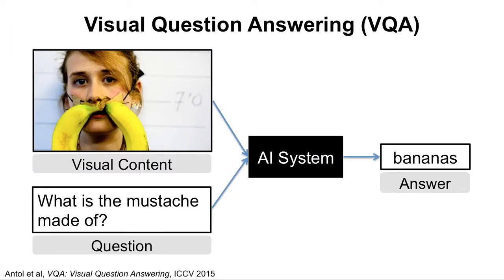Let me begin with what the visual question answering task is about. In this task, a visual content and a question in natural language form are given. Then, a system is required to provide an accurate natural language answer by understanding both the visual content and the question.